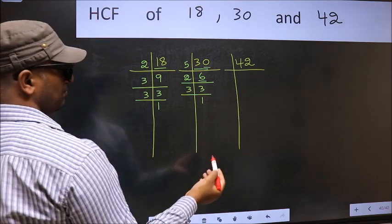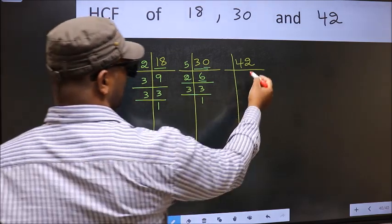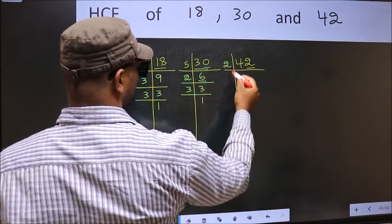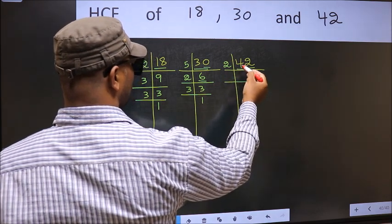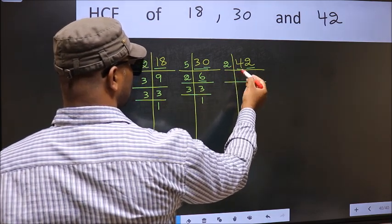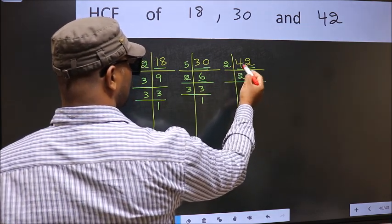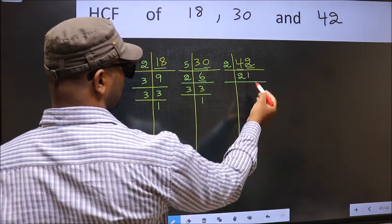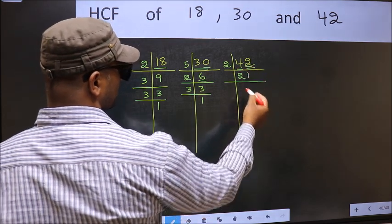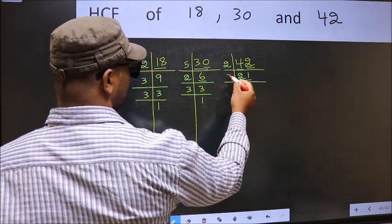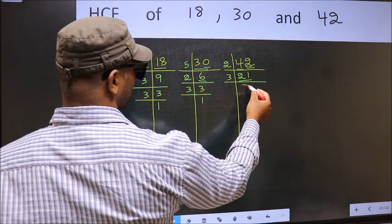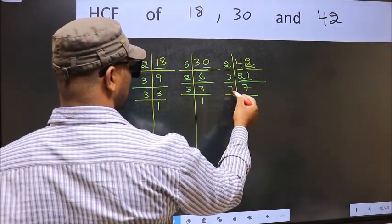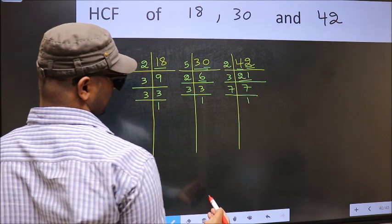Now the next number is 42. The last digit is 2, so take 2. 2 times 21 gives 42. Now 21 is 3 times 7, giving 21. Now 7 is a prime number, so 7 times 1 is 7.